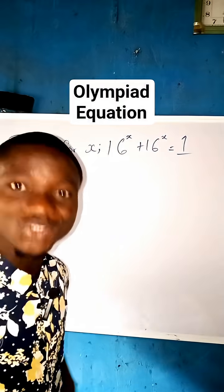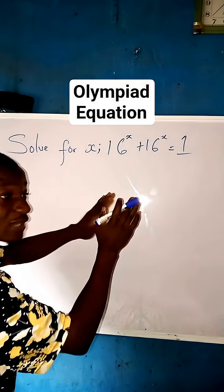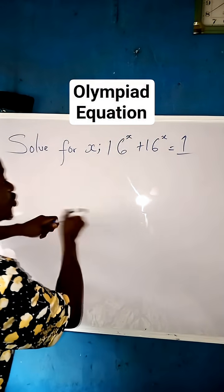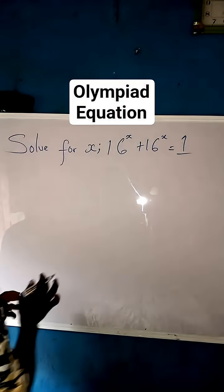It's too simple, let's solve it together. Now the first thing you're going to do, you can be solving it on your own side, but let us solve it. If you are with me, now the first thing you're going to do is to factorize, is to factor out one of the 16^x.